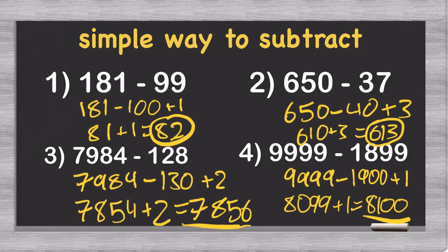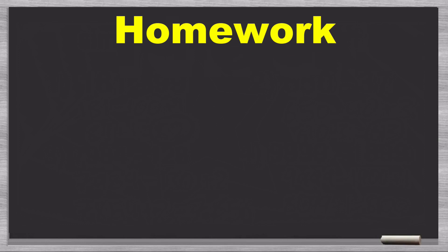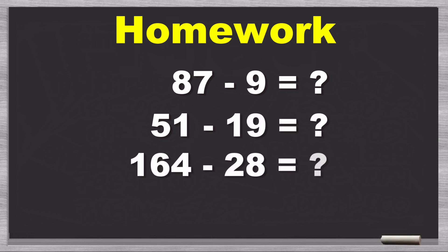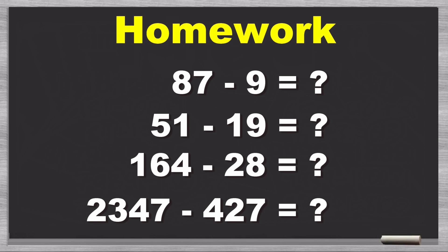So now that you've figured out exactly how to do this simple subtraction trick, it's time to do some homework. So try to figure out what 87 minus 9, 51 minus 19, 164 minus 28, and 2347 minus 427 are. Do use this trick to solve all of these, and I guarantee you it's going to be so much faster in the majority of cases than just doing normal subtraction. So make sure to use this trick because it can significantly save time when you're solving math problems just like this.